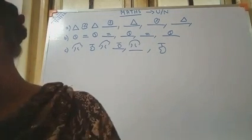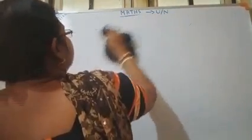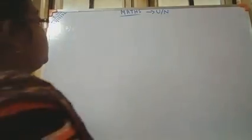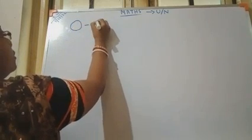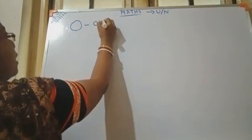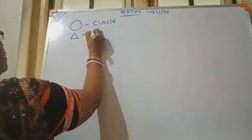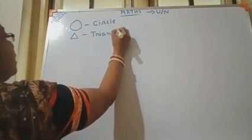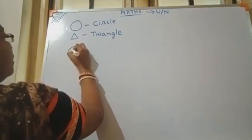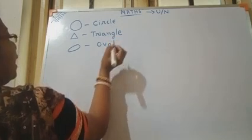Okay children, we will also revise today that shapes topic. This is circle — I draw with the free hand. Whenever you are drawing, don't draw with the free hand. Circle: C-I-R-C-L-E. Triangle: T-R-I-A-N-G-L-E. Oval: O-V-A-L.